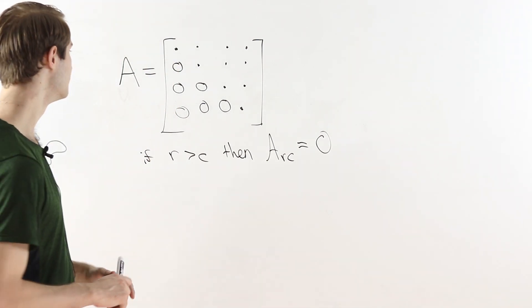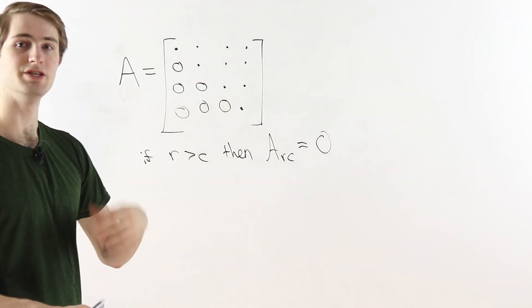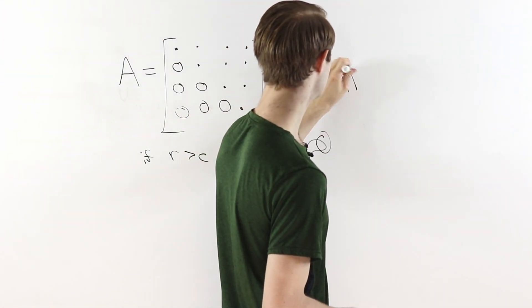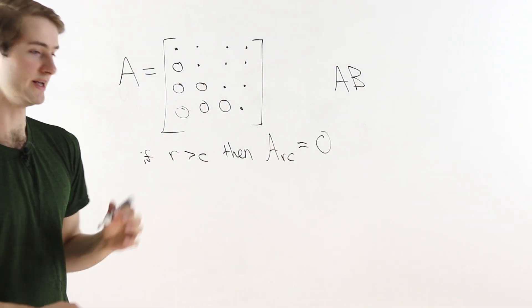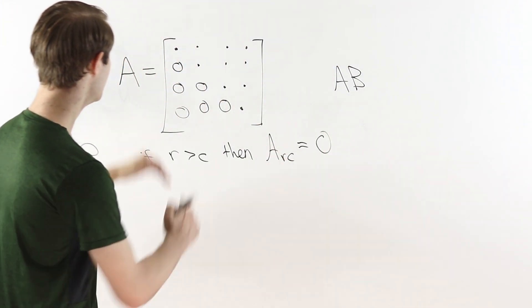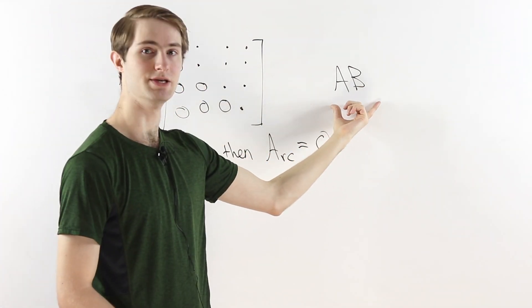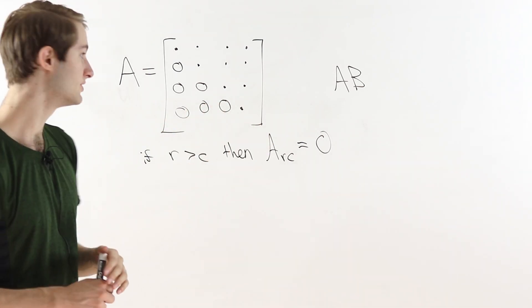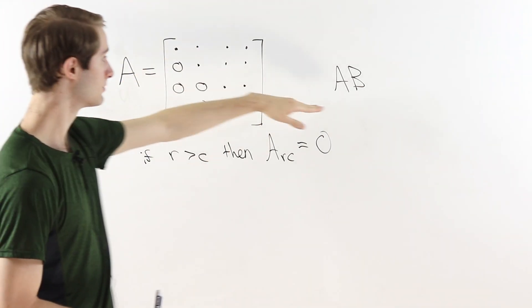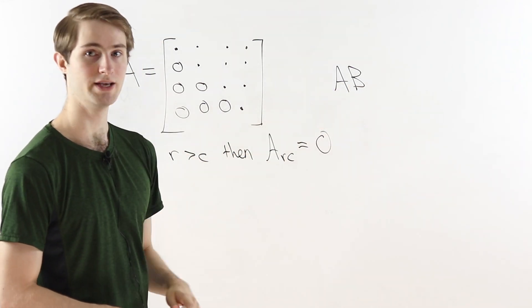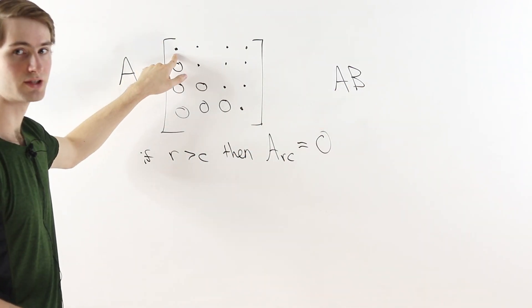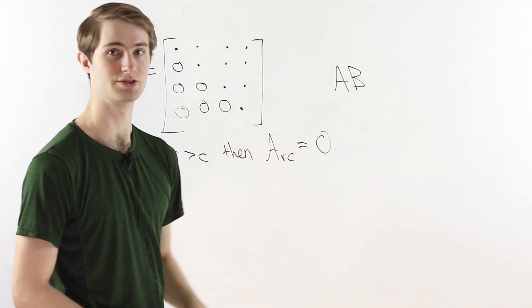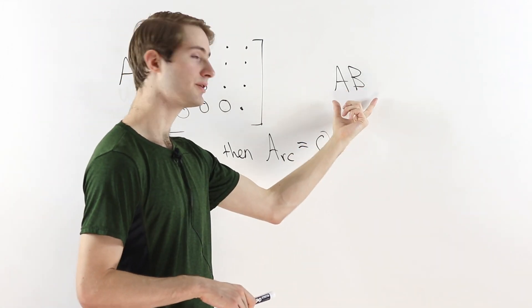Our goal is to prove that if we have two matrices A and B that both have upper triangular form, then the product AB will also be upper triangular. Furthermore, we can prove that the diagonal entries of AB can be obtained simply by multiplying the corresponding diagonal entries of A and B. For example, the top-left entry of AB is just the top-left entry of A times the top-left entry of B.